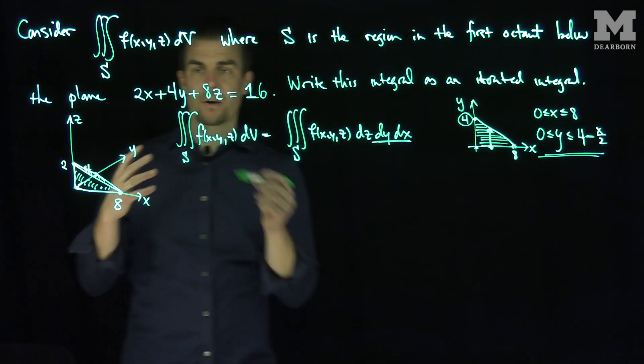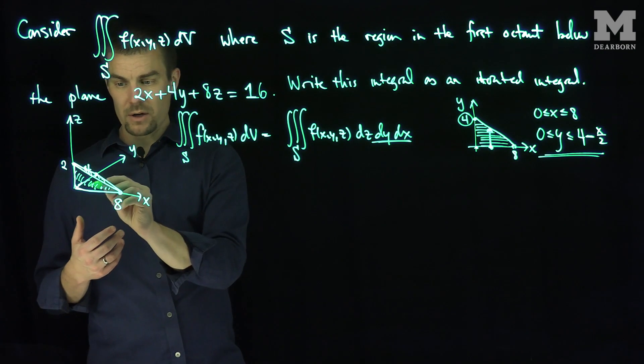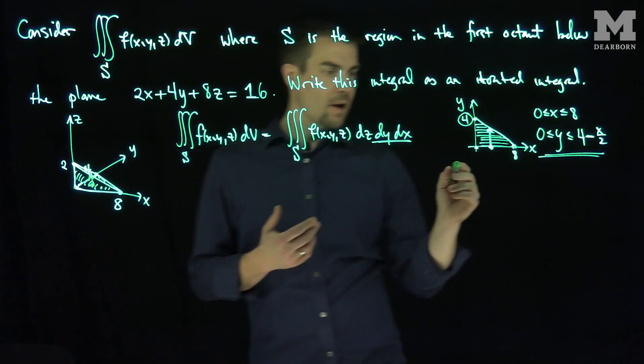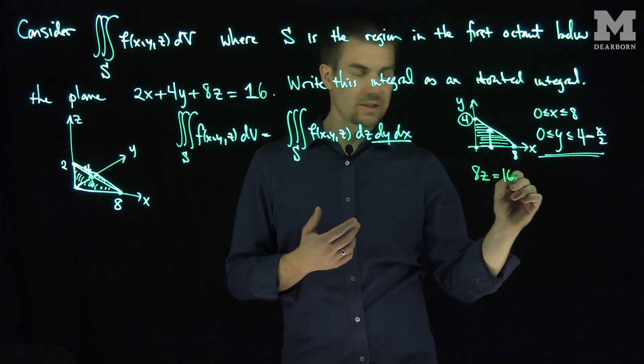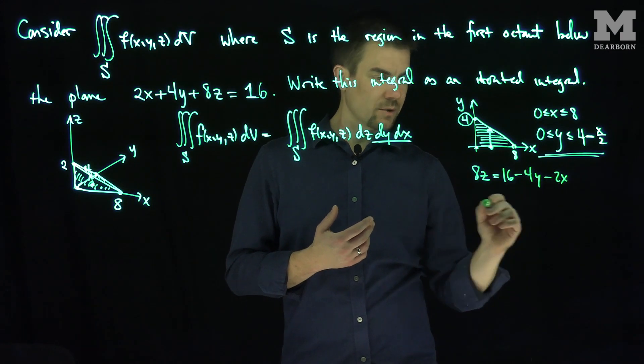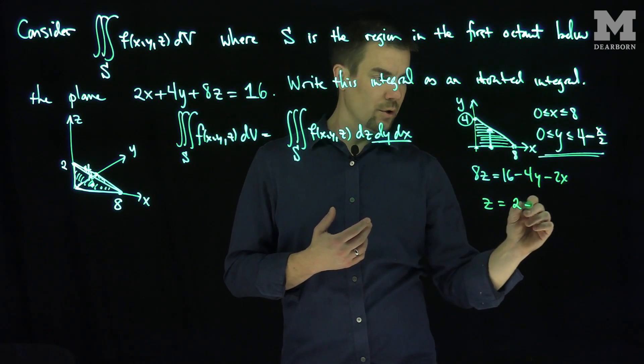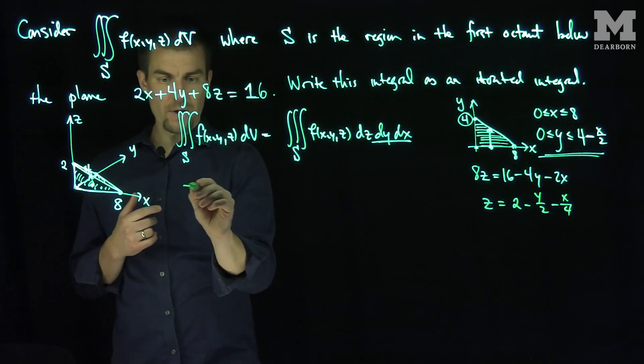Now, where is z going from? Well, z in this region goes from 0 on this plane over here, on the x-y plane, up to the equation of that plane. Well, what's the equation of that plane? That equation of that plane is 8z is equal to 16 minus 4y minus 2x, or it's saying that z is equal to 2 minus y over 2 minus x over 4. So now I can write this in what way?